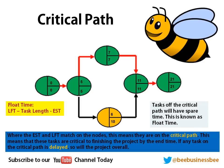In some cases, you may have more than one critical path. Now the way to check if you've got this correct in the exam — if you were constructing one of these — is to see if the path actually flows all the way through. You should always have a path that goes from the start to the finish. If you've got a node that's missing, you know you've gone wrong. The critical path has to run throughout the whole project.